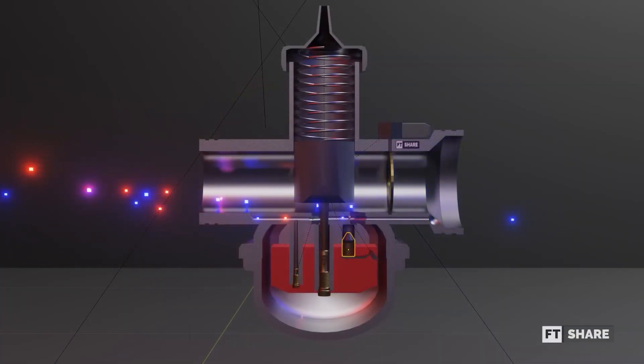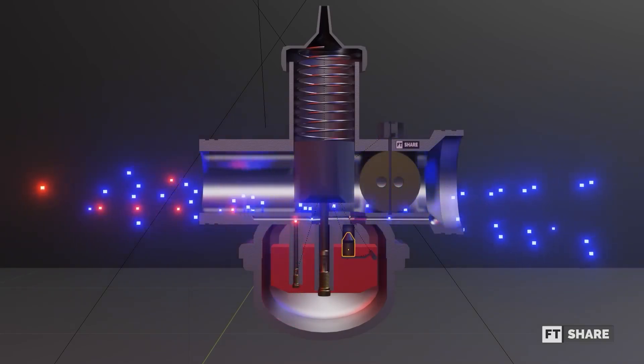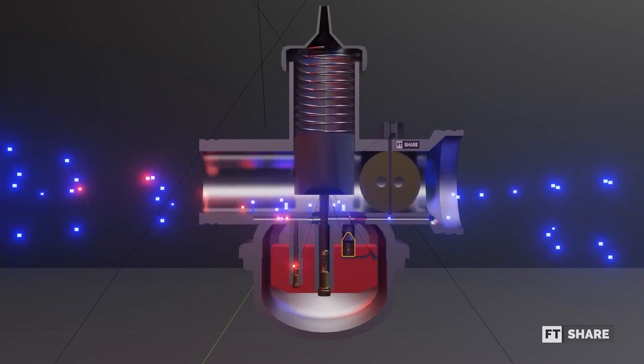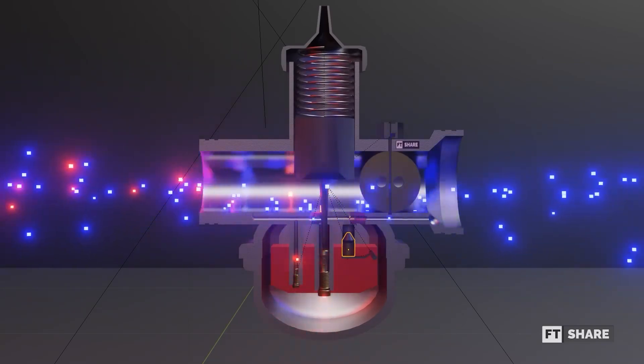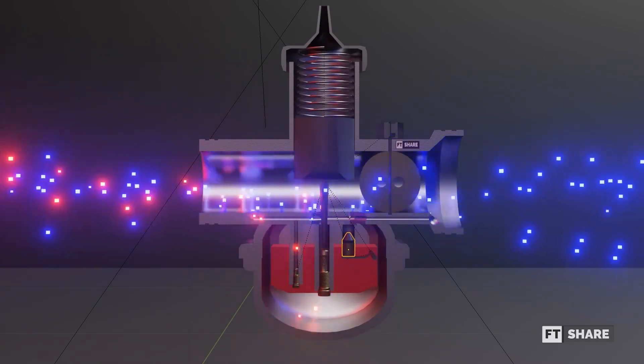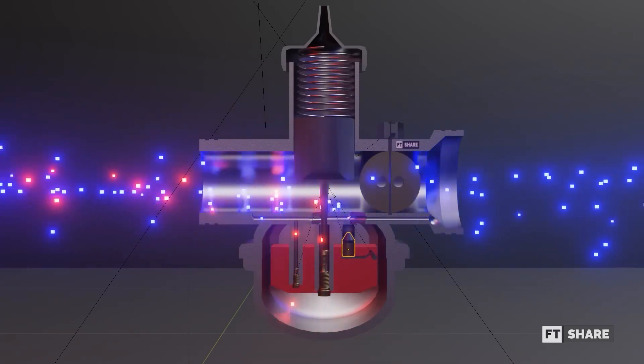Once the engine RPM stabilizes and the ideal working temperature is achieved, the choke lever on the carburetor can be disabled or closed. At this point, the engine speed can be increased using the gas pedal. When we press the gas pedal, the venturi is lifted along with the tapered needle, increasing the air supply and creating greater turbulence in the floating chamber.